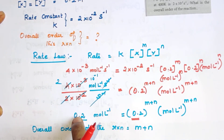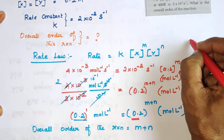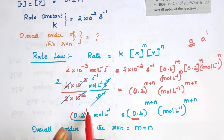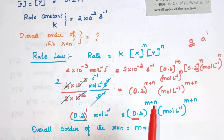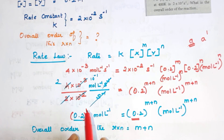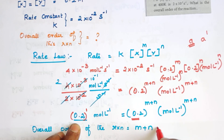Now 0.2 is the same on both sides. Since 0.1 equals 0.2 to power 1, we can write 0.2 power 1 on the left side. Since the bases are equal — 0.2 equals 0.2 — the powers must be equal. Therefore m plus n is equal to 1. The overall order of the reaction is 1.